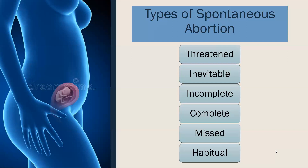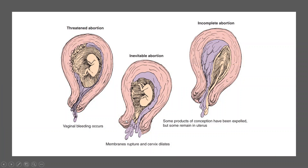Here are pictures illustrating these conditions. Incomplete and inevitable show membrane rupture and cervical dilation. Threatened shows some early bleeding. Sometimes there can be bleeding early in pregnancy and the pregnancy continues normally, so all vaginal bleeding doesn't automatically mean a miscarriage will occur — it is simply a sign that we need to perform more assessment.